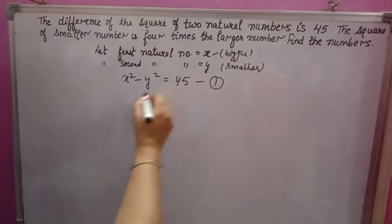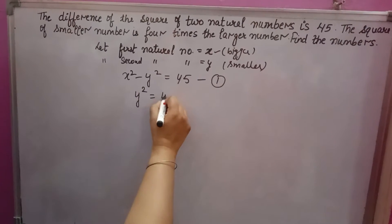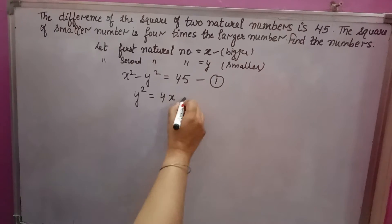The square of the smaller means y square is equal to 4 times the larger number, 4 into x. So 4x is the second equation.